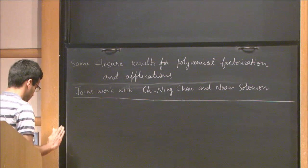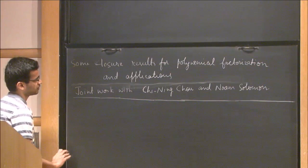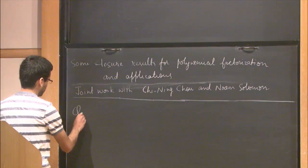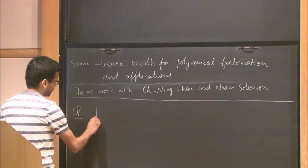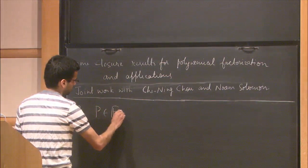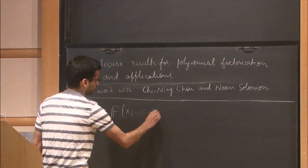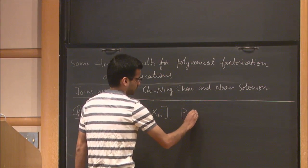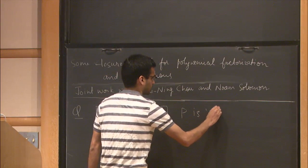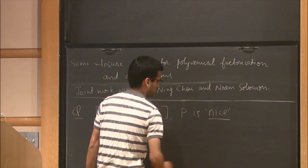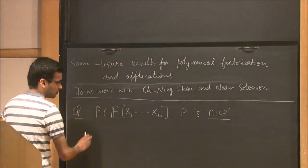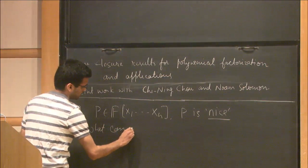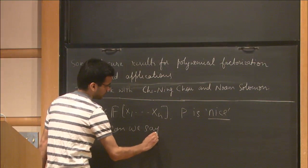The basic question which motivates this work is the following. Let's say we have a polynomial P and P is nice — I will formally say later what nice means. The question is: what can we say about the factors of P?